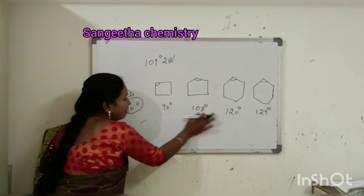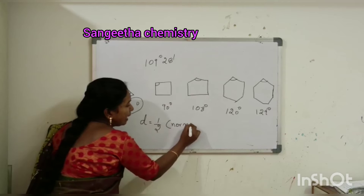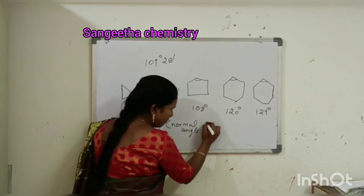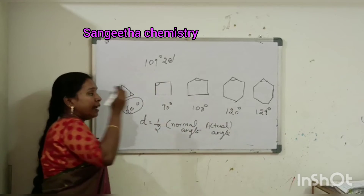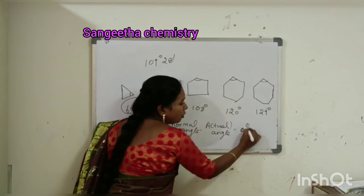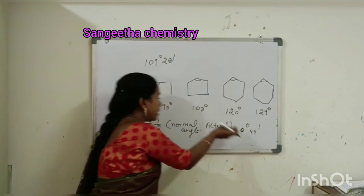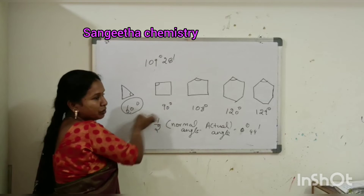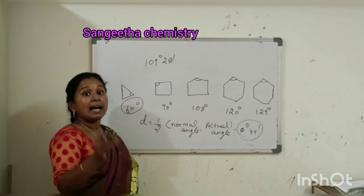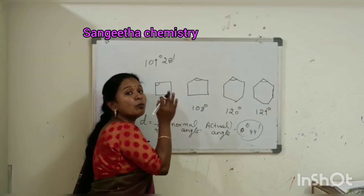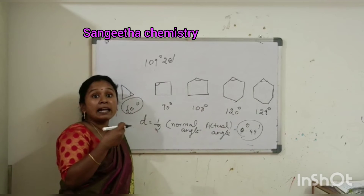Using the angle of deviation formula D = ½ (normal angle − actual angle): for cyclopentane the deviation is 0 degrees 44 minutes — this is the minimum strain, so cyclopentane is very stable. For cyclopropane it is 24 degrees 44 minutes, and for cyclobutane it is 9 degrees 44 minutes. As per Bayer, the most stable cycloalkane is cyclopentane.